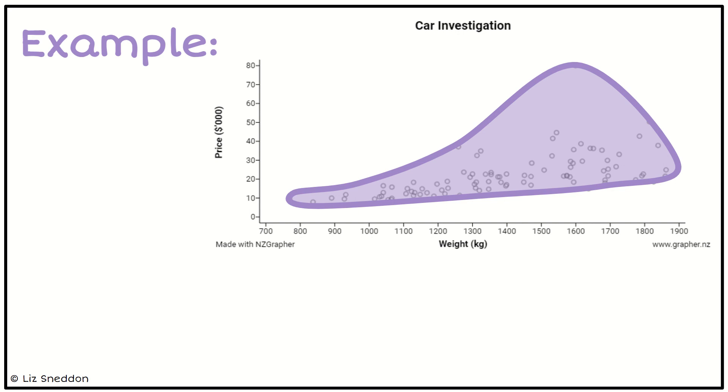What I want to look at is how wide it is for different weights of cars. For low weights around 800 to 900 kilograms, the variation in price is quite small. When I look at cars that weigh around 1100 to 1200, the variation is a little bit wider.